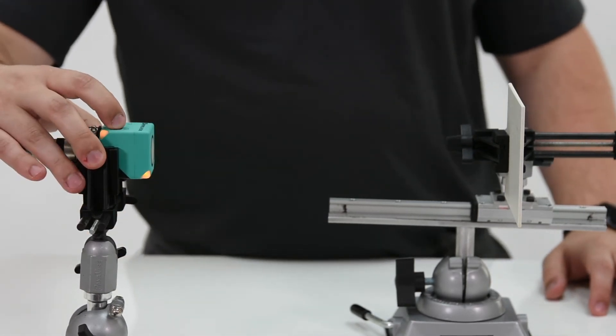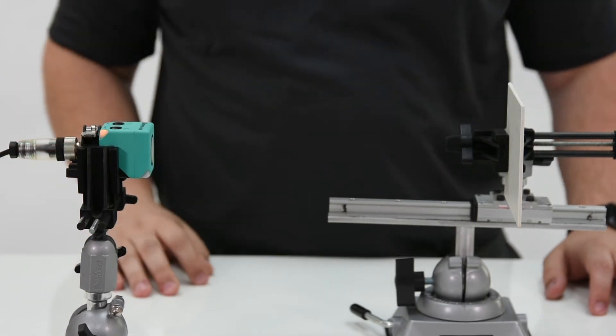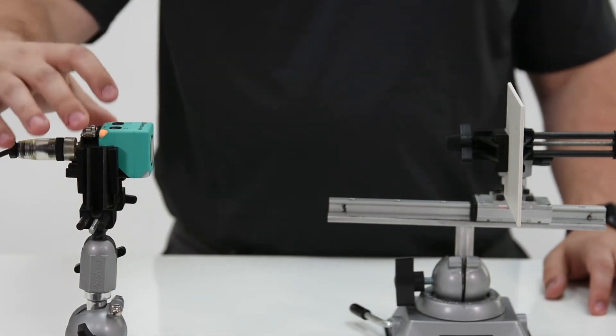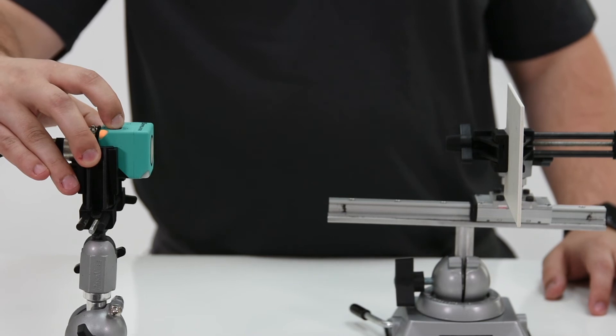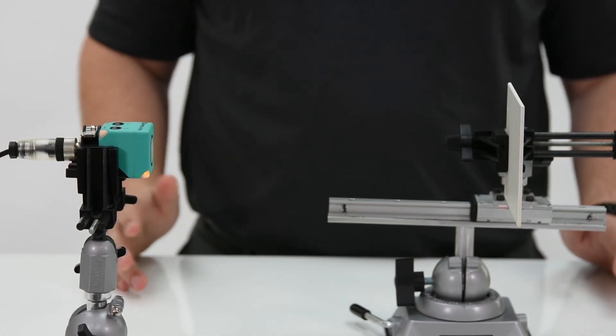We'll do the same thing with T2. Hold it for two seconds. Set your target to the required distance. Hold T2 for two seconds again. Both switch points are now set.